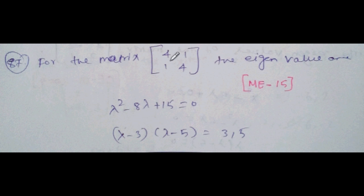For the matrix [4, 1; 1, 4], the eigenvalues are. This problem, Mechanical 2015. Lambda squared, 4 plus 4 is 8, minus 8 lambda plus determinant 16 minus 1 is 15. Factorize: lambda minus 3, lambda minus 5, so 3, 5 is eigenvalues.